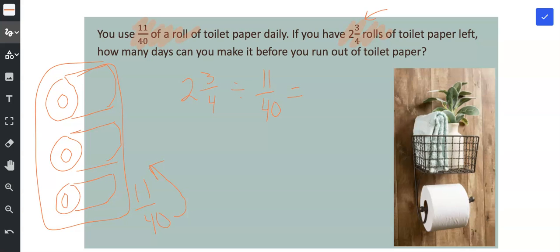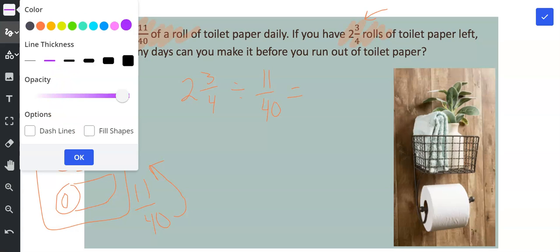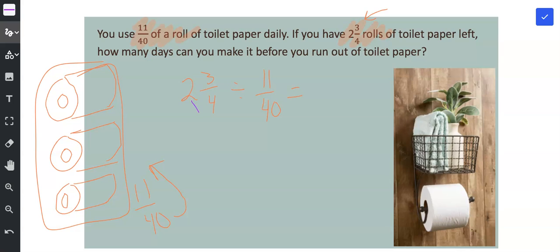So the first thing we need to do when we're dividing with fractions is we need to make sure that both are fractions. So what I'm going to do first is I'm going to multiply the whole number and the denominator. 2 times 4 is 8. And then I'm going to add to that the numerator, and I get 11. And then the denominator remains a 4. So 2 3/4 is equivalent to 11/4.